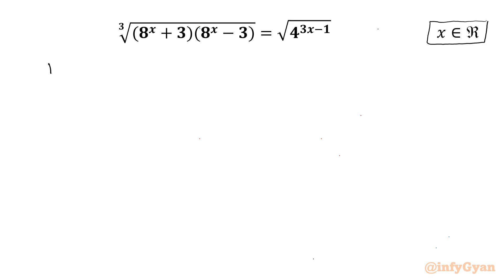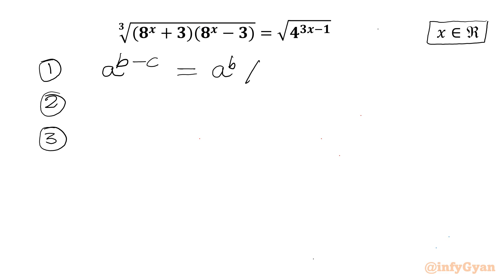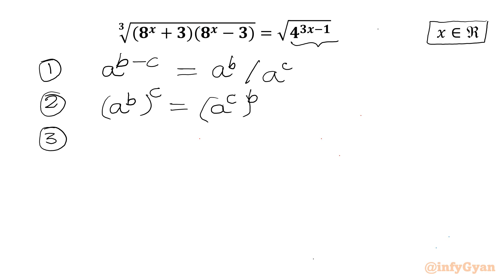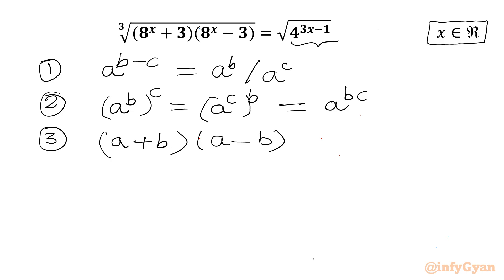Let us get started by writing three most powerful algebraic properties. Property number 1: a^(b − c) = a^b divided by a^c, which I will apply in RHS. Property number 2: (a^b)^c = (a^c)^b = a^(b × c). And third property: difference of two squares — (a + b)(a − b) = a² − b².